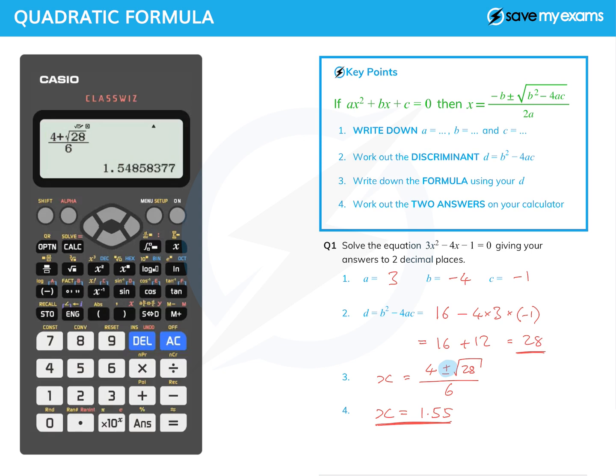And now I need to do the calculation again for the other bit of the plus or minus, for the minus. But I don't need to start again, I can just use my arrow keys. If I take the left one, that gets me back into the calculation I've just done. And navigating around until I'm just to the right of the plus, I can press delete and put a minus in.